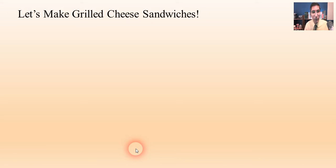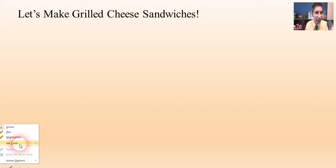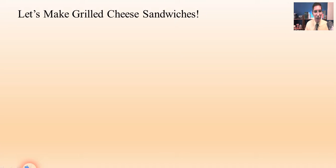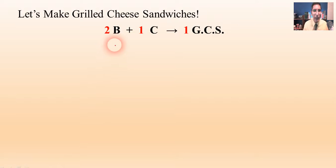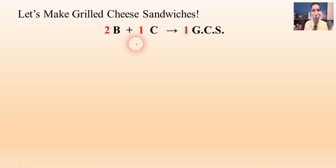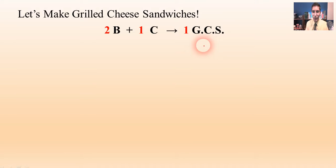Now sometimes students have some trouble with this, so we're going to step away from chemistry for a second and talk about something completely different: grilled cheese sandwiches. We're going to take a look at the process for making a grilled cheese sandwich. You're going to need two slices of bread — that's what the 2B stands for — and one slice of cheese. So two slices of bread and one slice of cheese makes one GCS, or one grilled cheese sandwich. That's the recipe, or the equation, for making a grilled cheese sandwich.